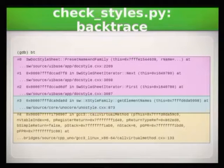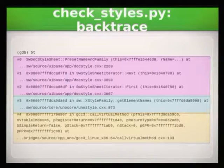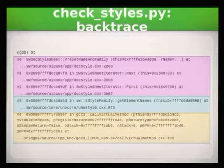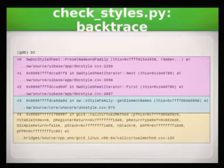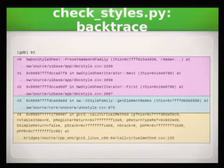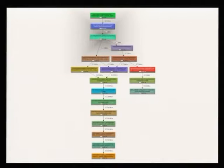And then you have the wrapper function — that's the bluish/greenish layer — which is SwXFamily::GetElementNames. And if you then just step through it, you actually see what kind of stuff this does in the Writer core, which is the stuff above it in the call stack — the lilac layer.